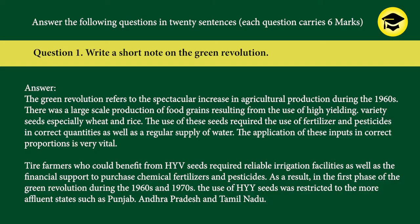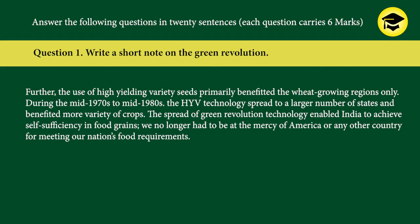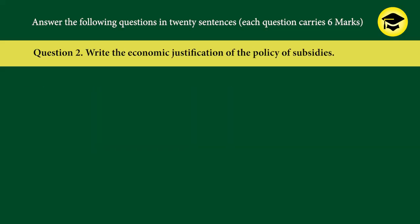In the first phase of the green revolution during the 1960s and 1970s, the use of HYV seeds was restricted to more affluent states such as Punjab, Andhra Pradesh, and Tamil Nadu. The use of high-yielding variety seeds primarily benefited wheat-growing regions only. During the mid-1970s to mid-1980s, HYV technology spread to a larger number of states and benefited more variety of crops. The spread of green revolution technology enabled India to achieve self-sufficiency in food grains, and we no longer had to rely on other countries for meeting our nation's food requirements.